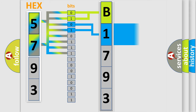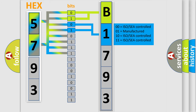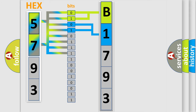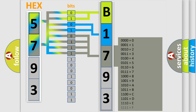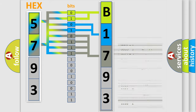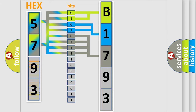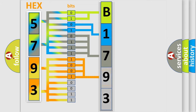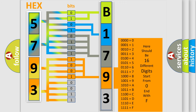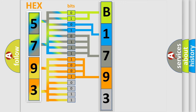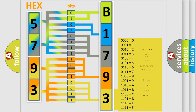The next two bits determine the second character. The last bits of the first byte define the third character of the code. The second byte is composed of a combination of eight bits. The first four bits determine the fourth character, and the combination of the last four bits defines the fifth character. A single byte conceals 256 possible combinations.